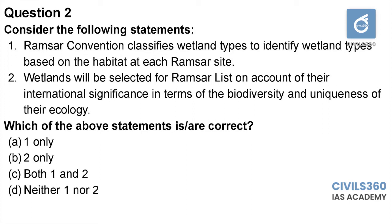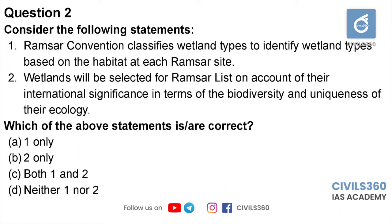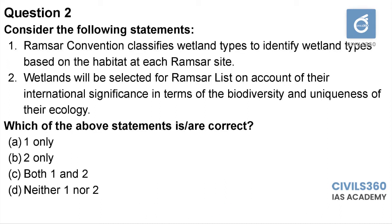Question number two: consider the following statements. Statement one — Ramsar Convention classifies wetland types to identify wetland types based on the habitat at each Ramsar site. Statement two — wetlands will be selected for the Ramsar list on account of their international significance in terms of biodiversity and uniqueness of their ecology. The Ramsar Convention has classified wetlands into various types in order to identify them faster.